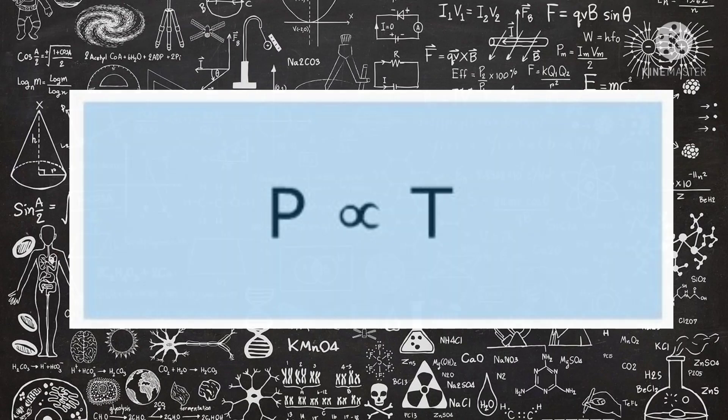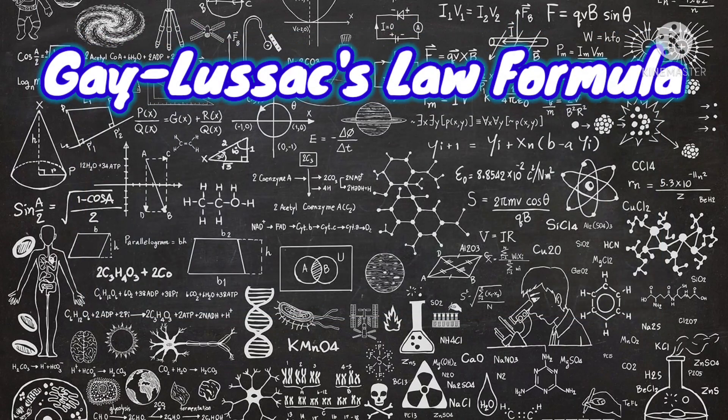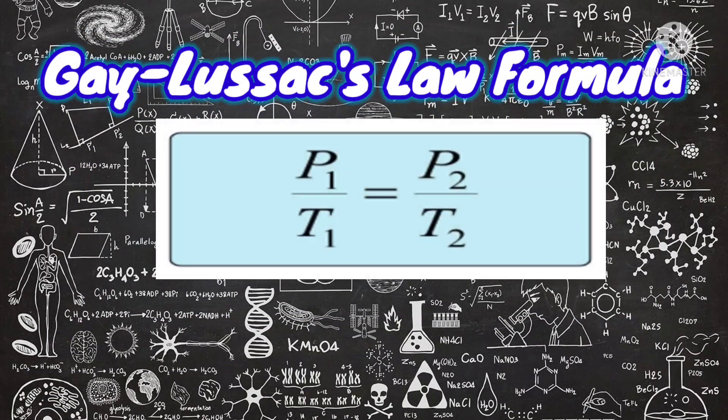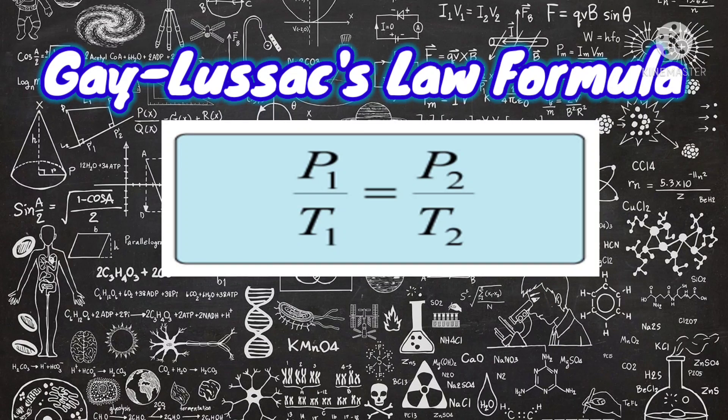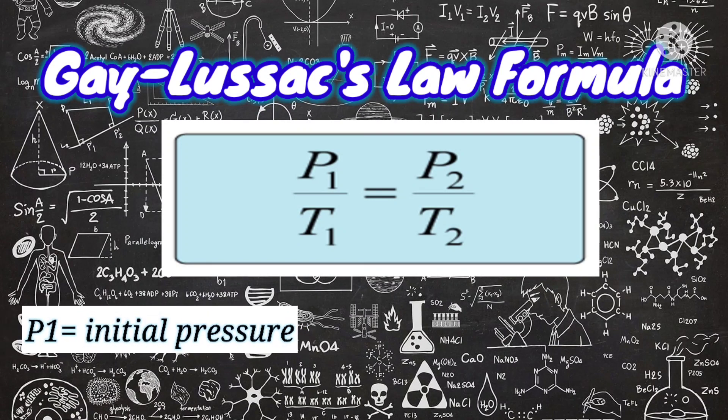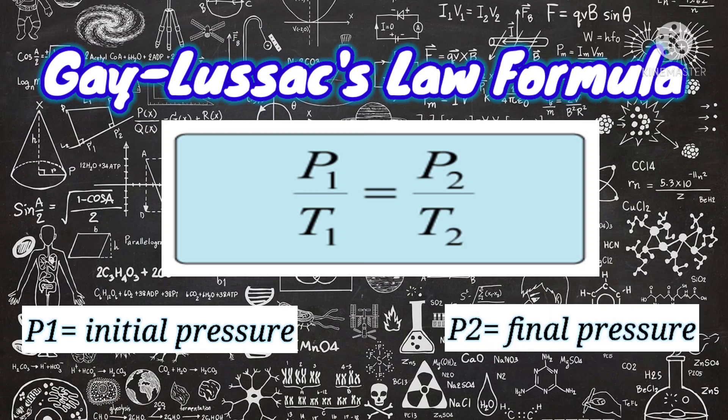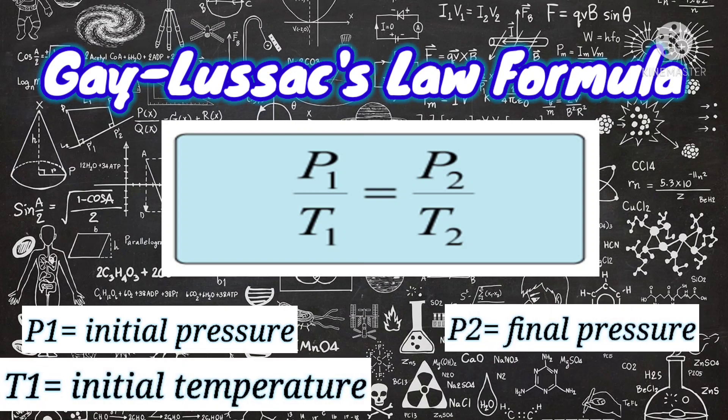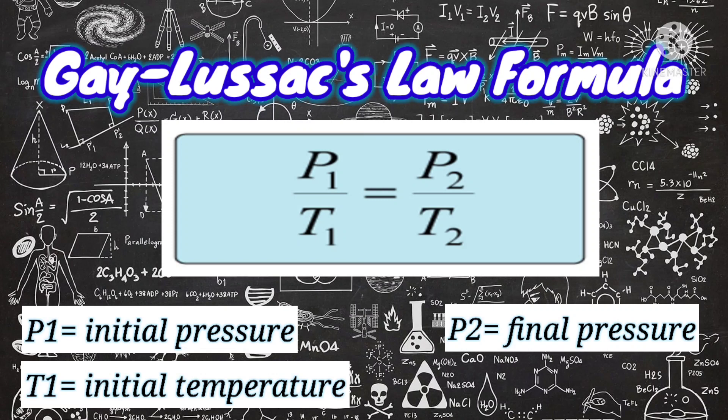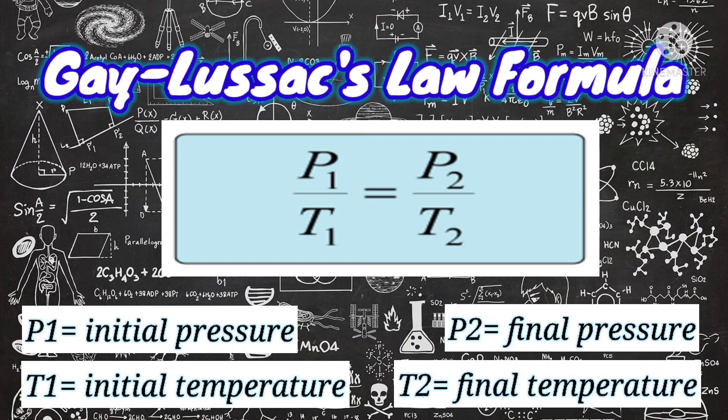Thus, arising with the Gay-Lussac's Law formula, P1 over T1 is equal to P2 over T2, where P1 is the initial pressure, P2 is the final pressure, T1 is the initial temperature, and T2 is the final temperature.